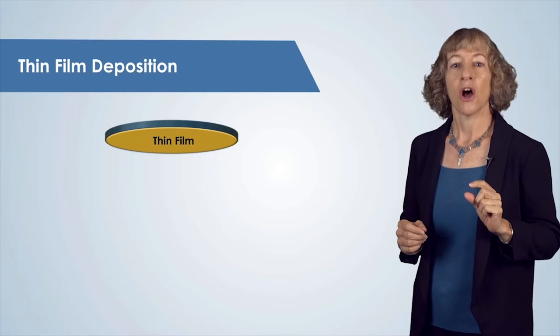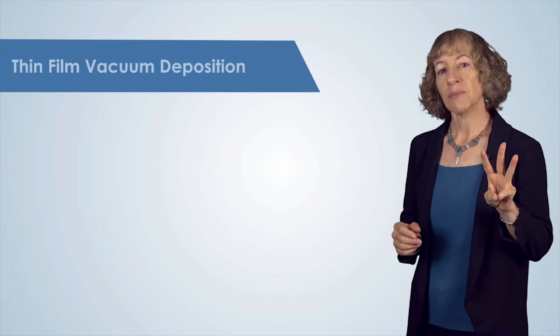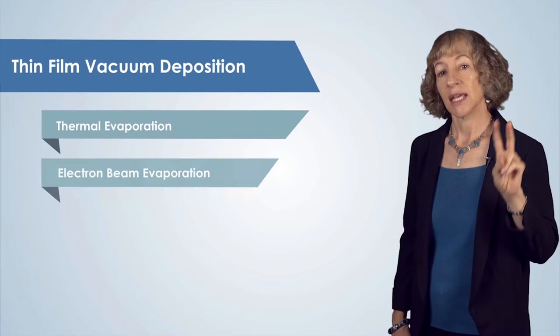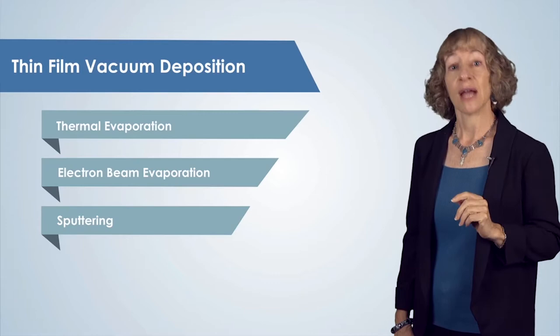The thicknesses of these vacuum deposited layers are very thin, on the order of 5 nanometers to 250 nanometers. The three most common thin film vacuum deposition techniques are thermal evaporation, electron beam evaporation, and sputtering. In this video, I will introduce you to the process of thermal evaporation.